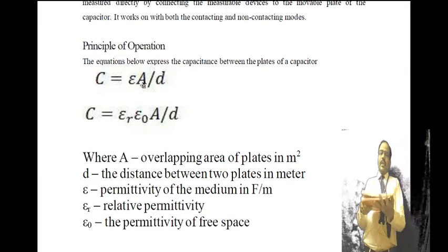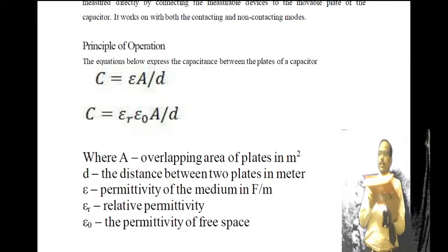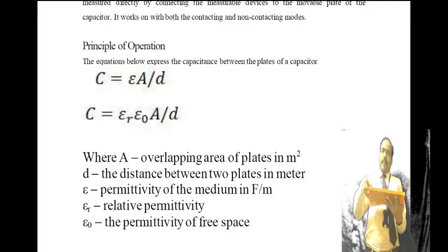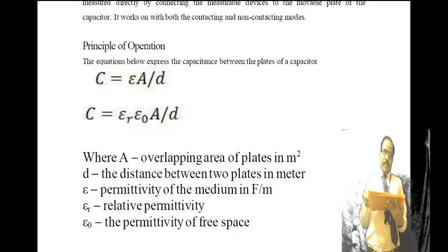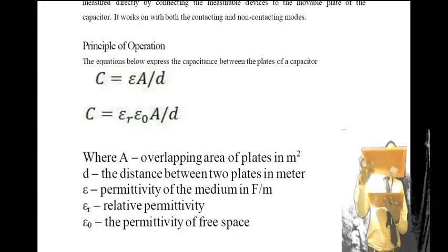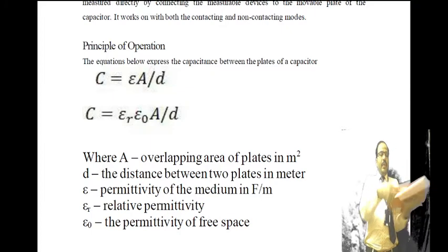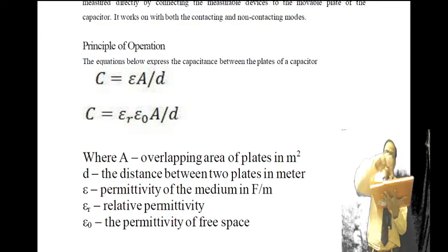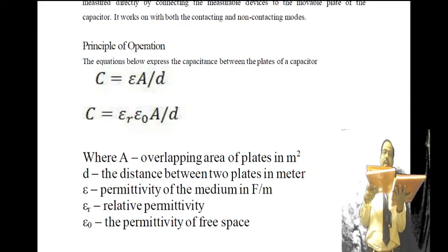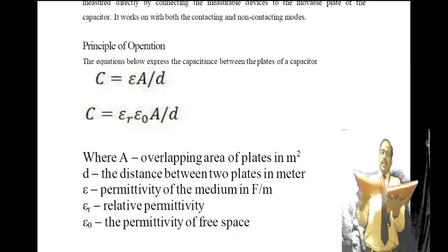In the formula, A is the overlapping area between the two plates and d is the distance between the two plates. Consider two parallel plates with width w and length l. The overlapping area is w × l when fully overlapping. If the plates are completely offset, the overlapping area is zero.